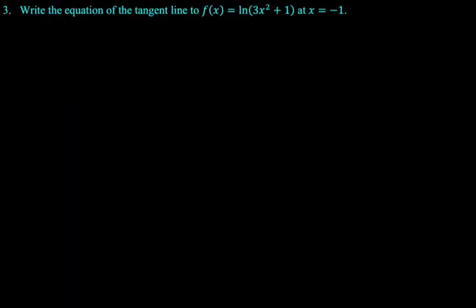All right. Write the equation of the tangent line to f(x) equals natural log of the quantity (3x² + 1) at x equals negative 1. All right. So, we're going to need to know the value of the function, and we're going to need to know the value of the derivative. Let's do it. So, the value of the function is just going to be f(-1). It's going to be the natural log of 4, and I'm going to leave that. Natural log of 4 is 2 times the natural log of 2 because 4 is 2 squared, and then exponents become coefficients. But I don't think that's important here.